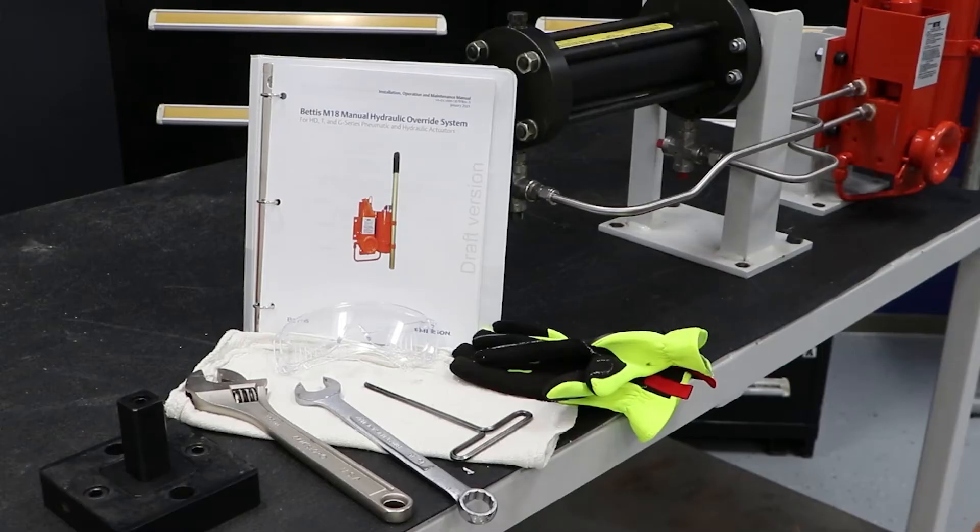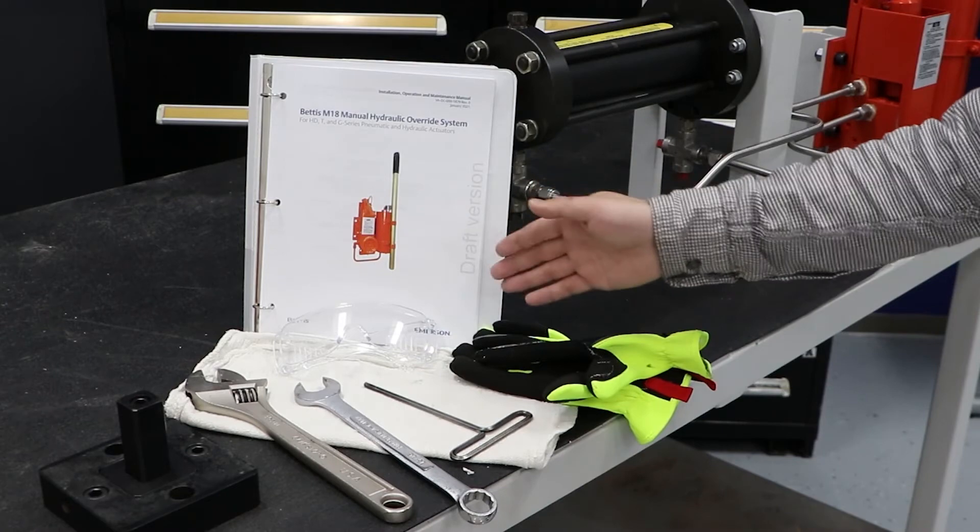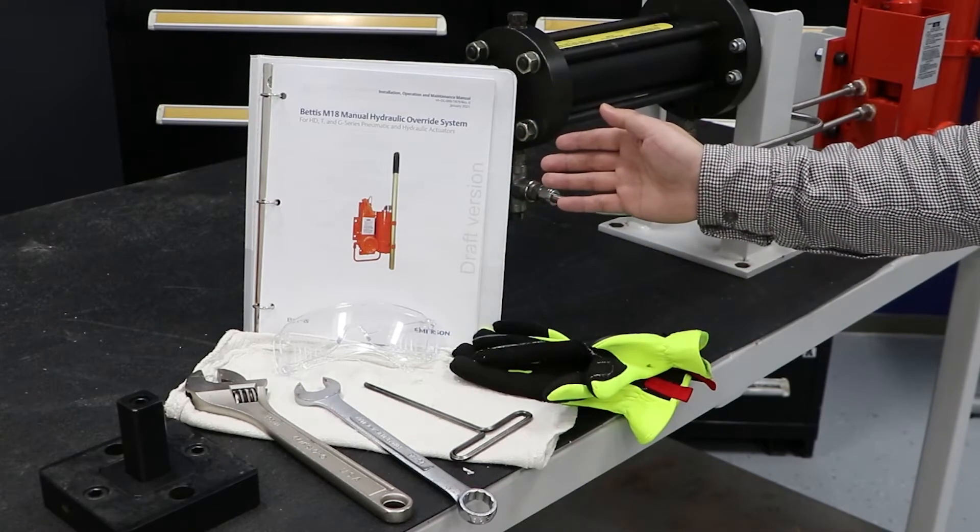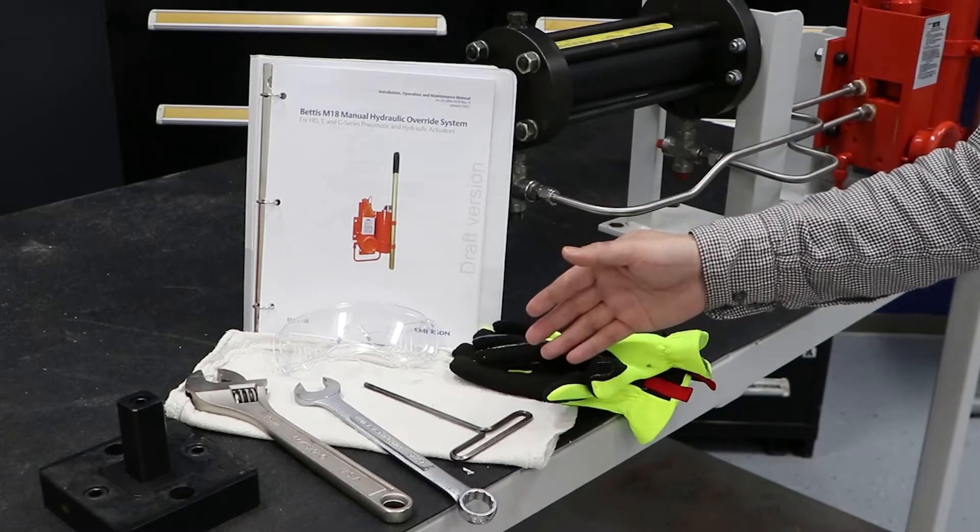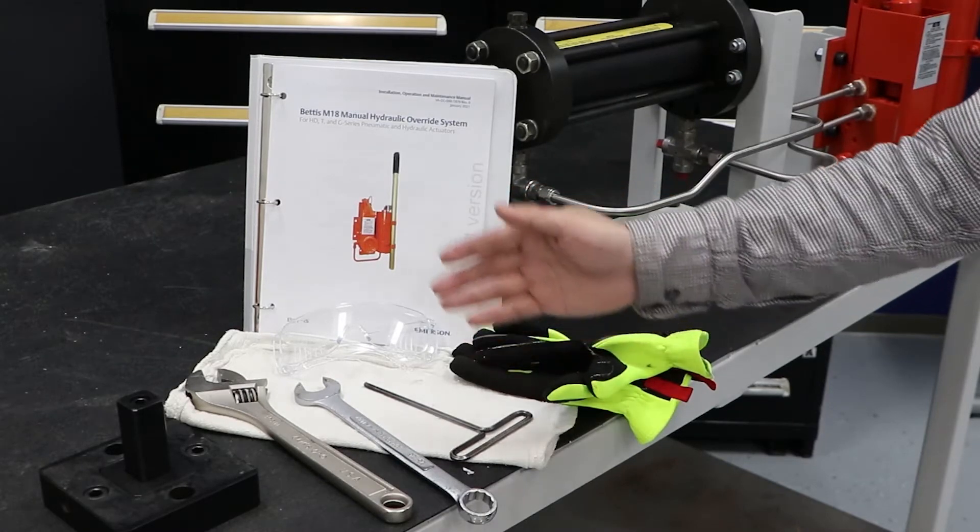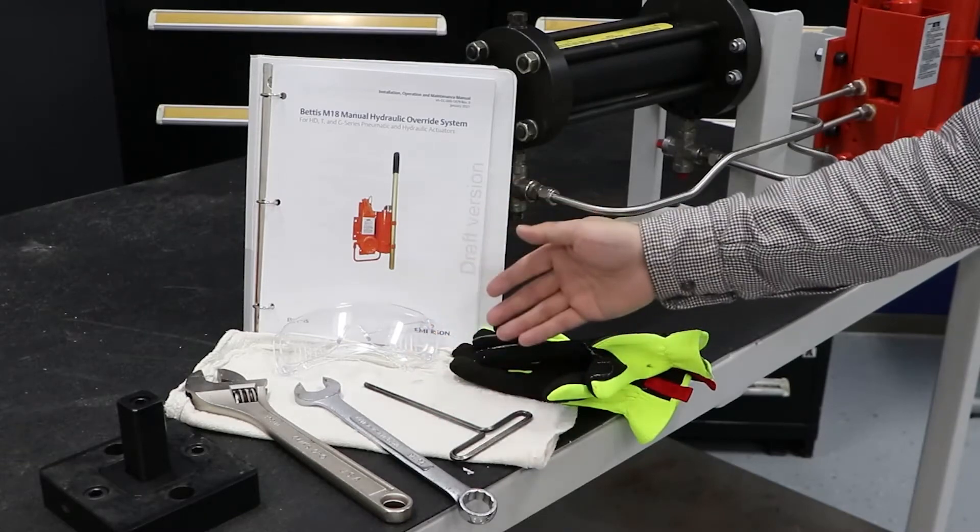Before you get started, make sure you have the proper tools assembled to start the work. First, make sure you have the proper PPE, a copy of the IOM for M18 manual hydraulic override system, a 3/16 Allen key, a 13/16 combination wrench or an adjustable wrench, and some rags.